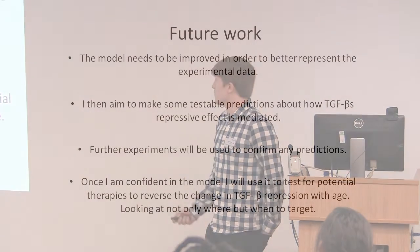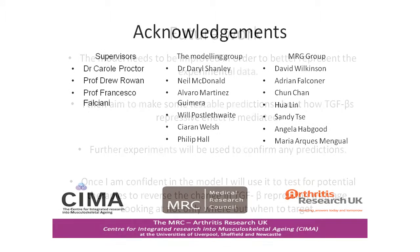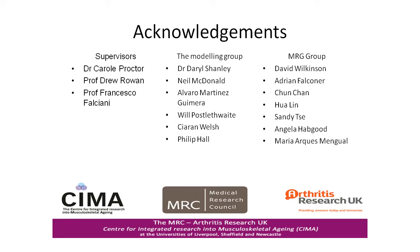My future work is to improve the model to better represent both the experimental data I have and additional data. I'd then like to make testable predictions about how the TGF-beta repressive effect is mediated, go on to test these experimentally, and make sure any predictions the model makes are validated before proceeding further. Once I'm confident in the model, I want to use it to test potential therapies that could reverse the change in TGF-beta repression with age, looking at not only where to target but also what the best time to intervene would be.